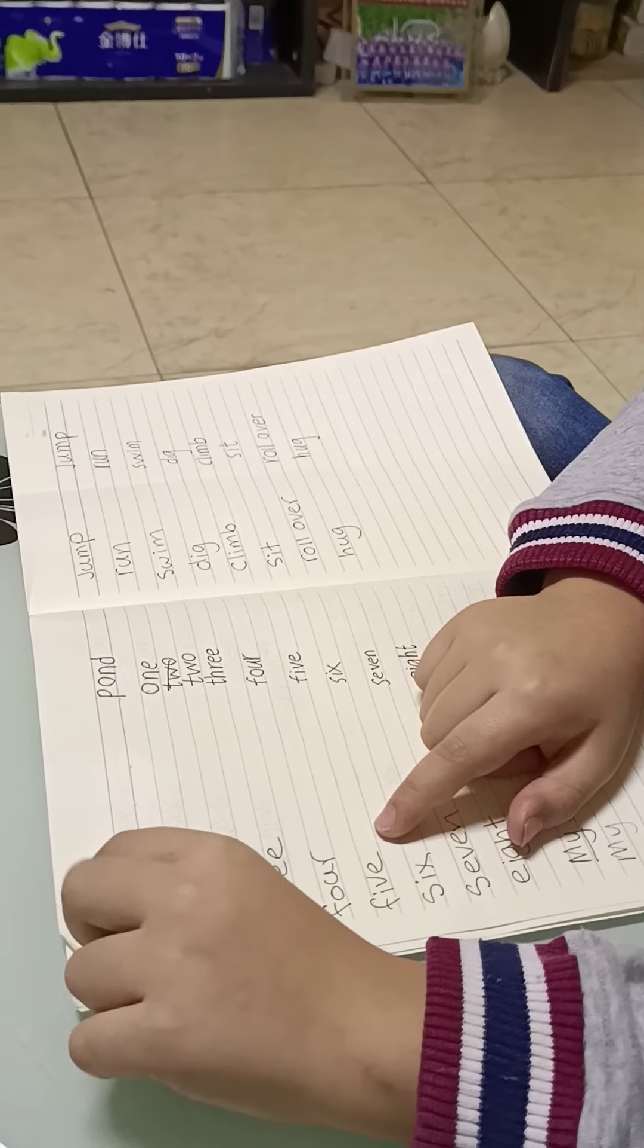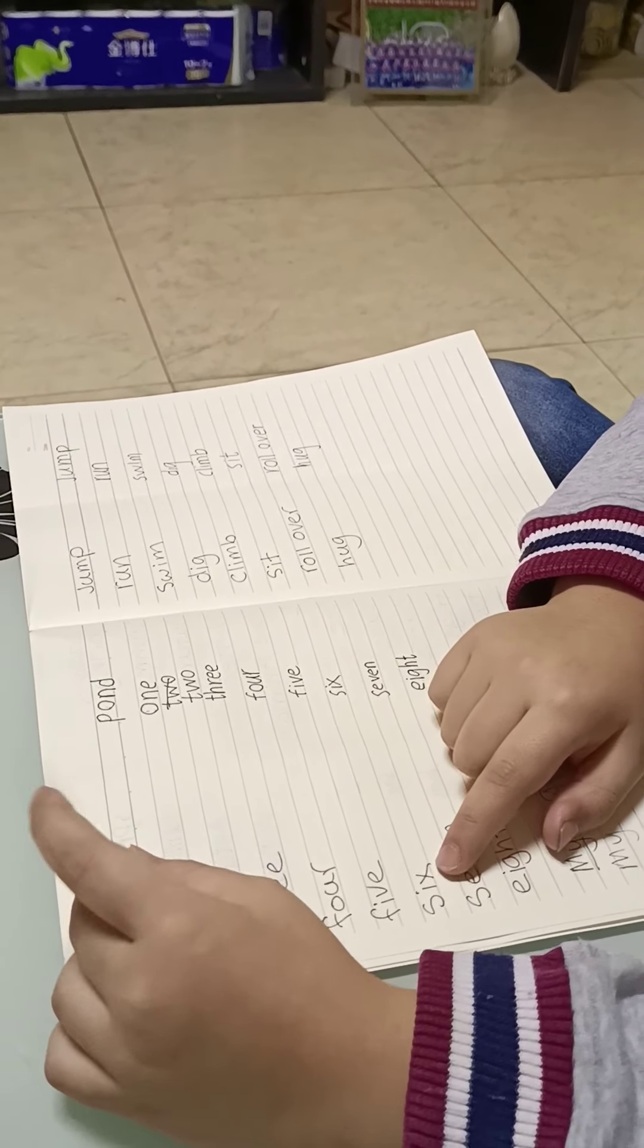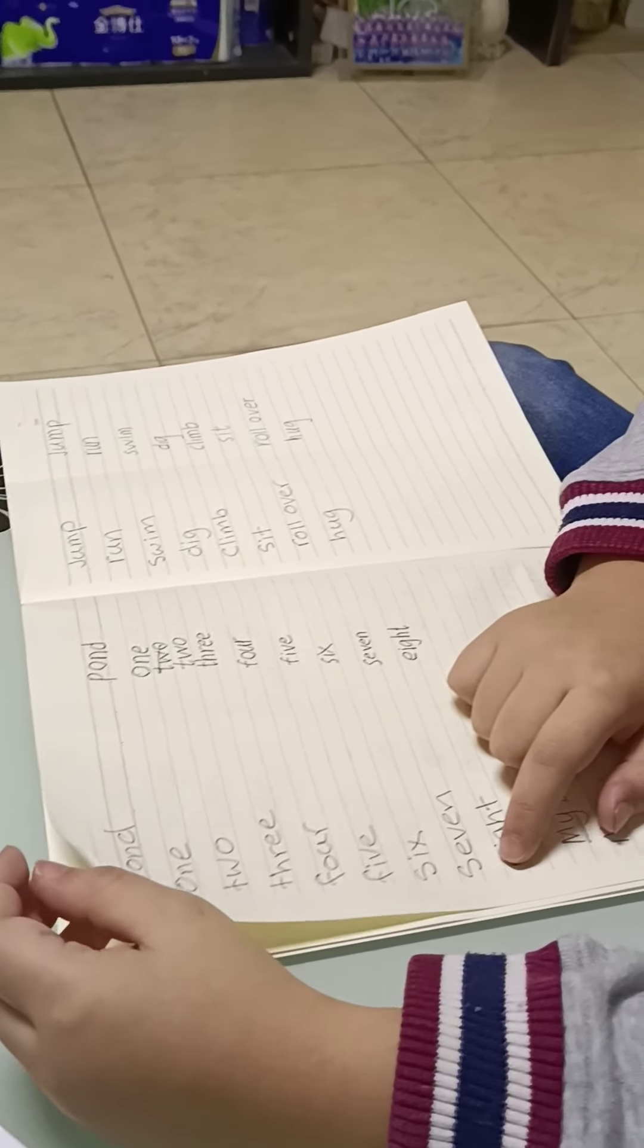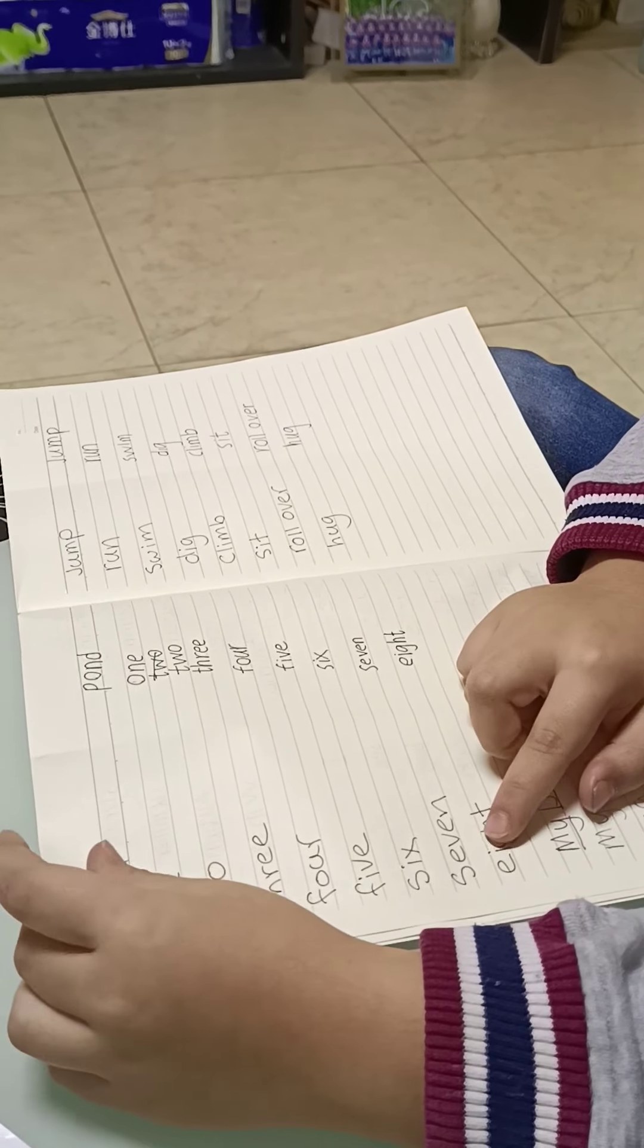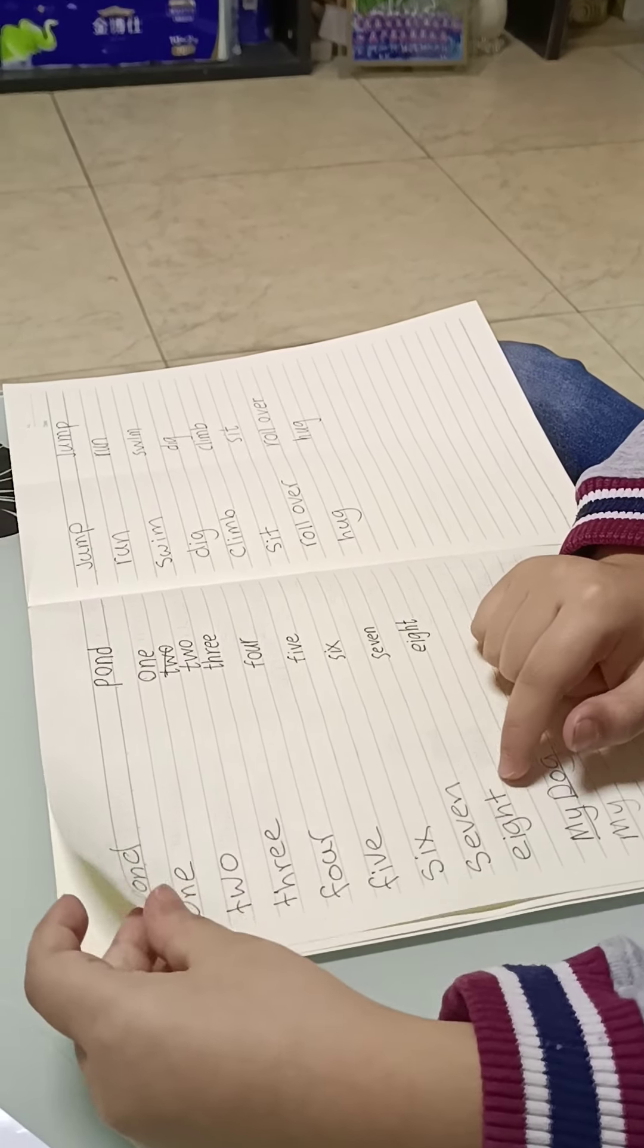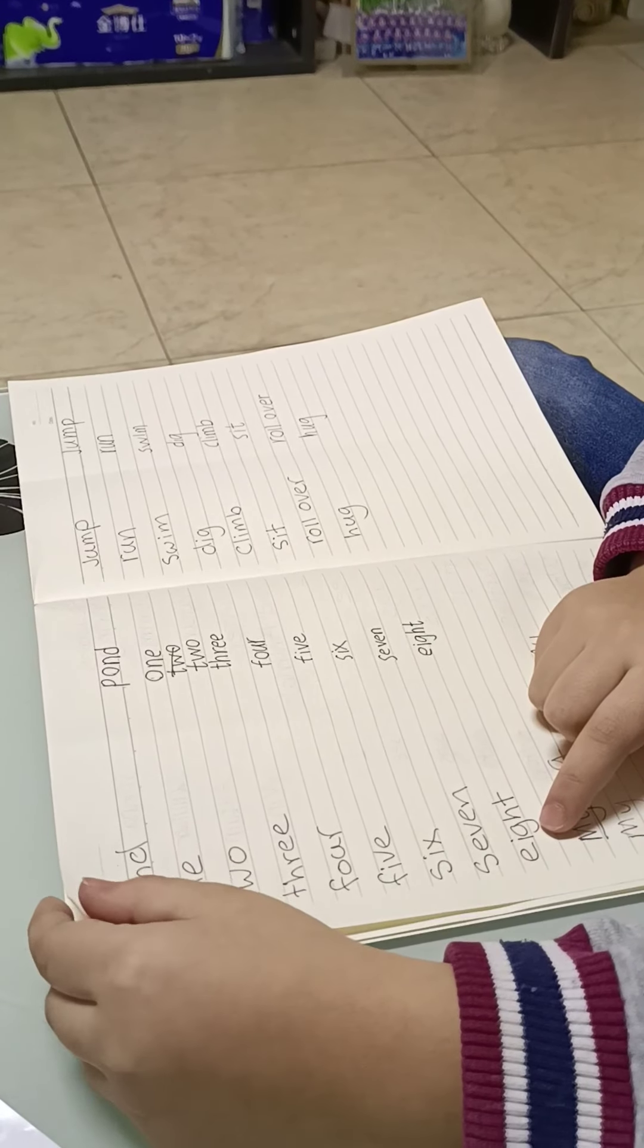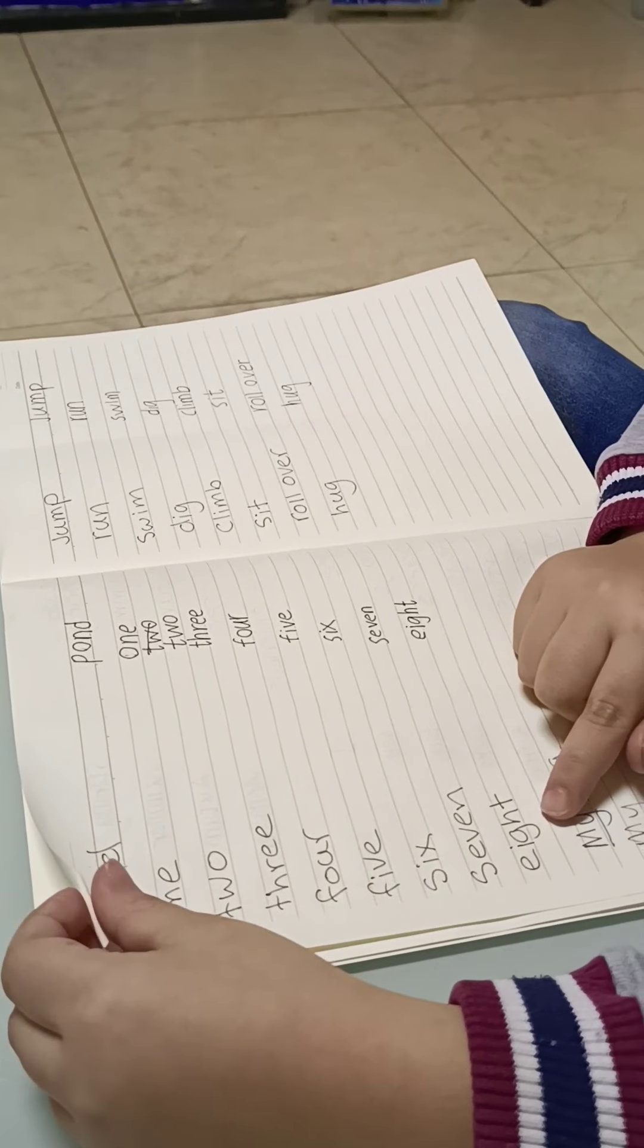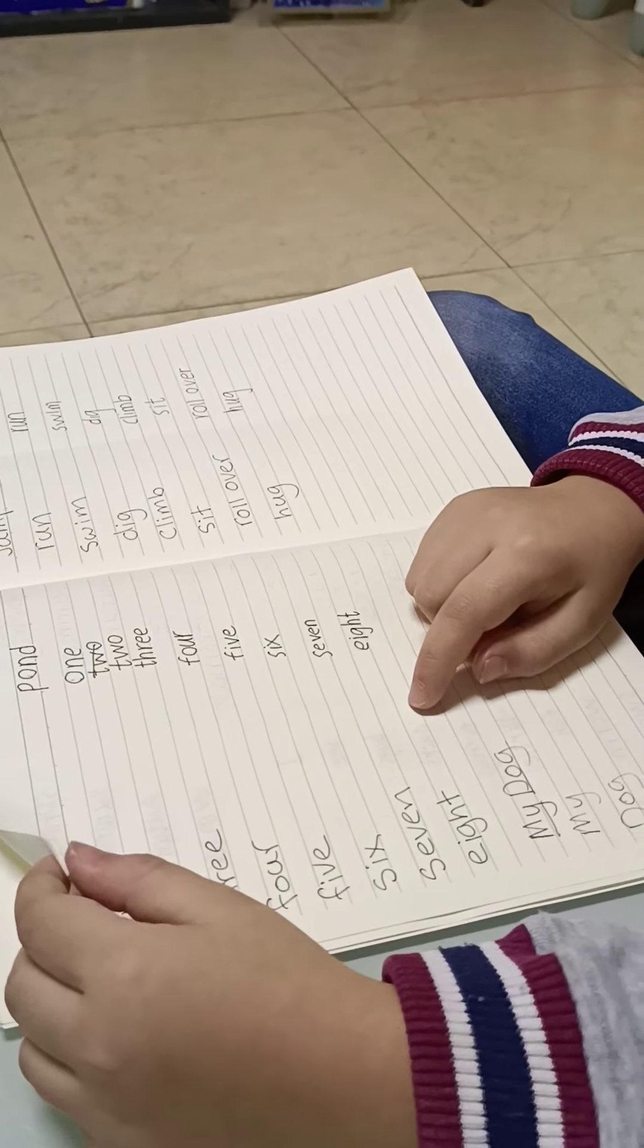Five, F-I-V-E, five. Six, S-I-X, six. Seven, S-E, V-E-V-E-N, seven. Eight, E-I-H, E-I-G-H-T, eight.